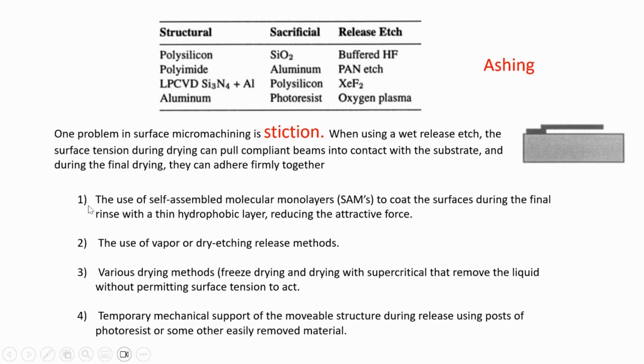What can you do to avoid stiction? First, use self-assembled molecular monolayers to coat the surface during the final rinse with a thin hydrophobic layer, reducing the attractive force. Second, use vapor or dry etching release methods, which I will discuss in my next video. Third, various drying methods like freeze drying and drying with supercritical fluids that remove the liquid without permitting surface tension to act.